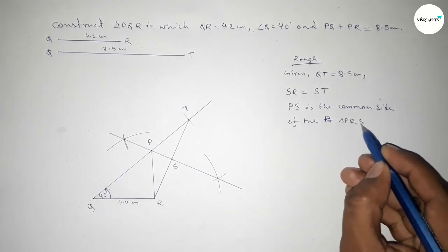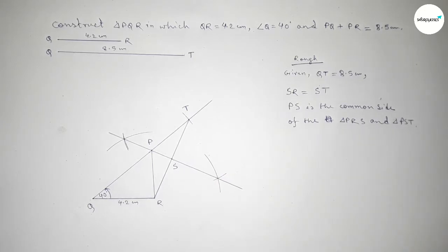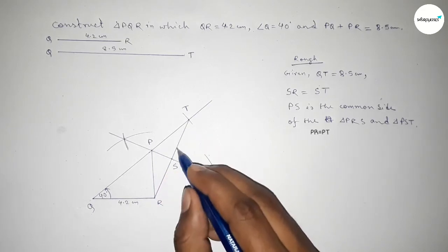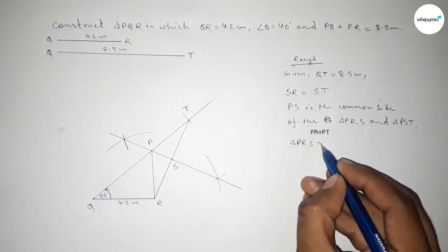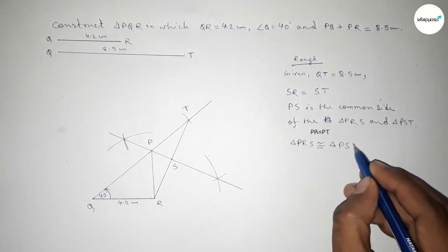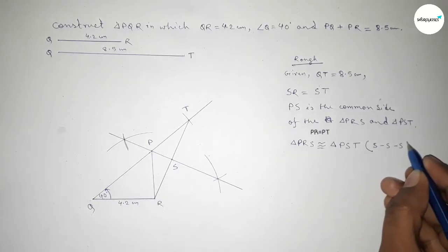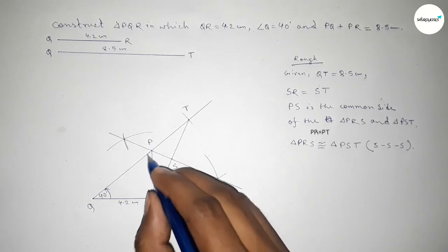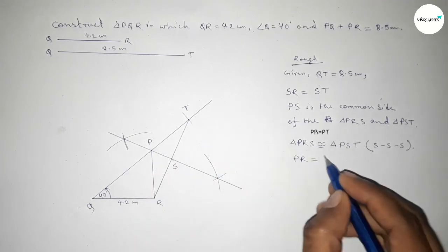The lengths PR and PT are equal. By the condition of Side-Side-Side, triangle PRS is congruent to triangle PST. Therefore we can write PR equals PT.